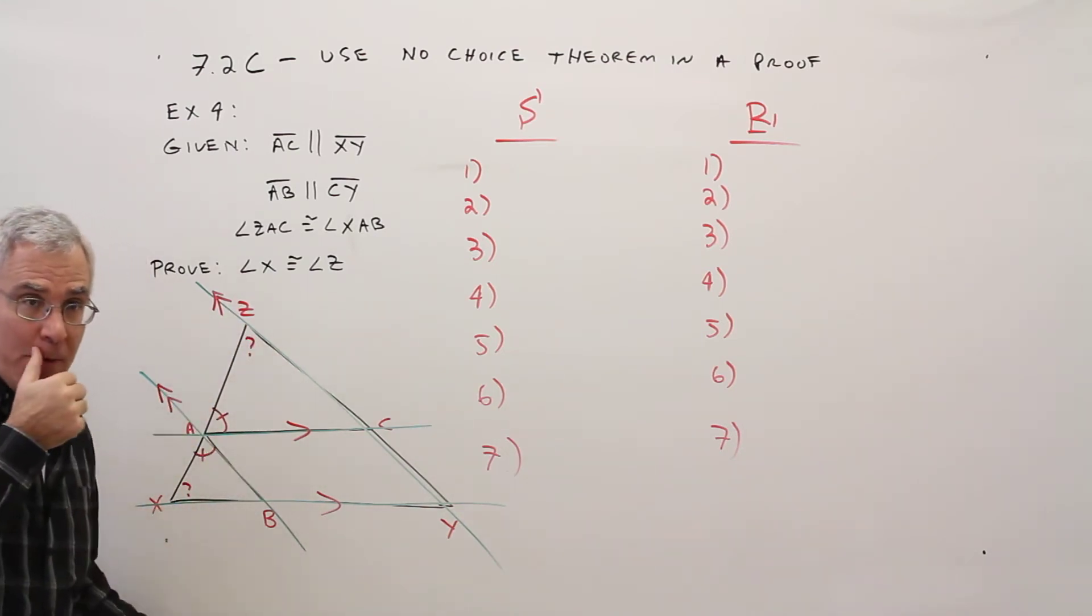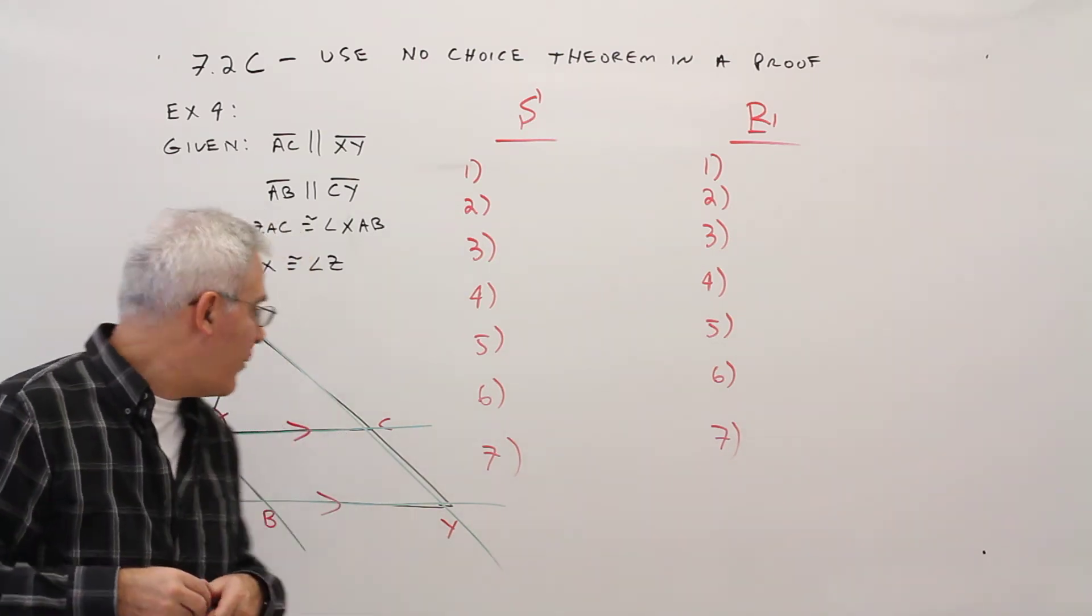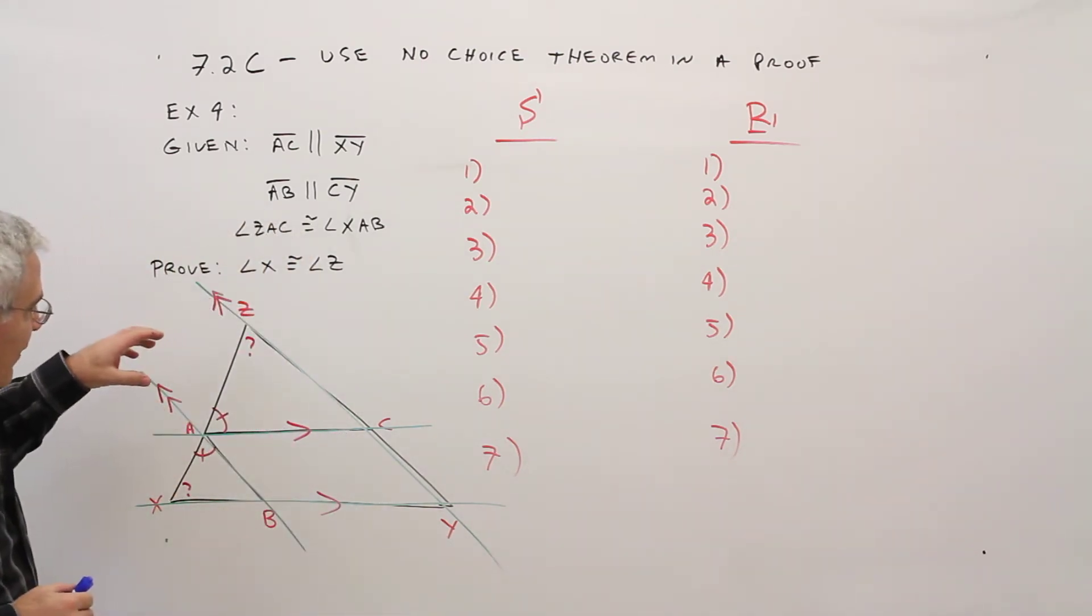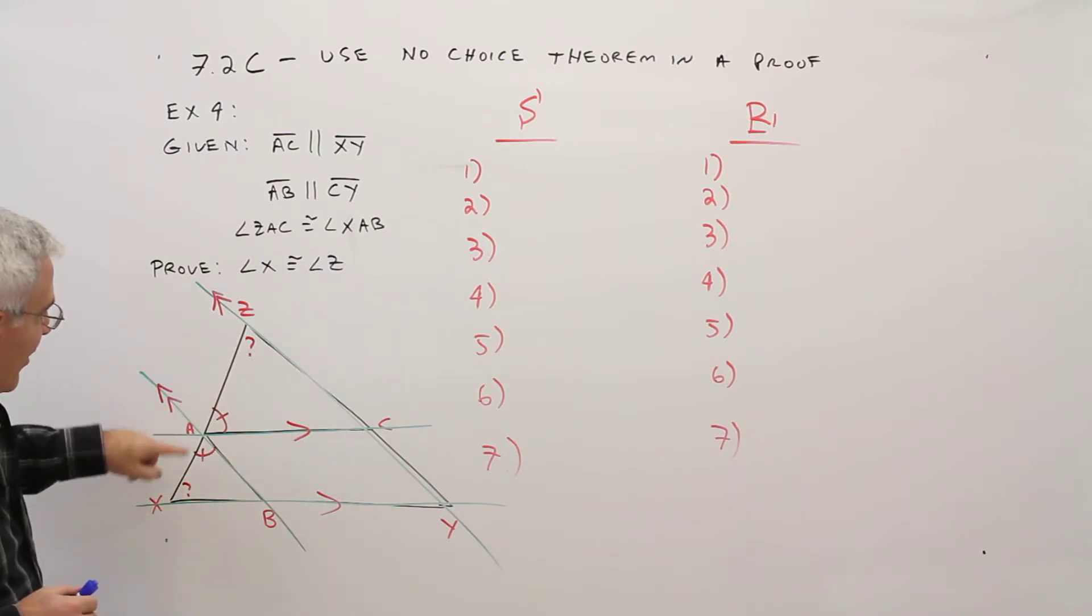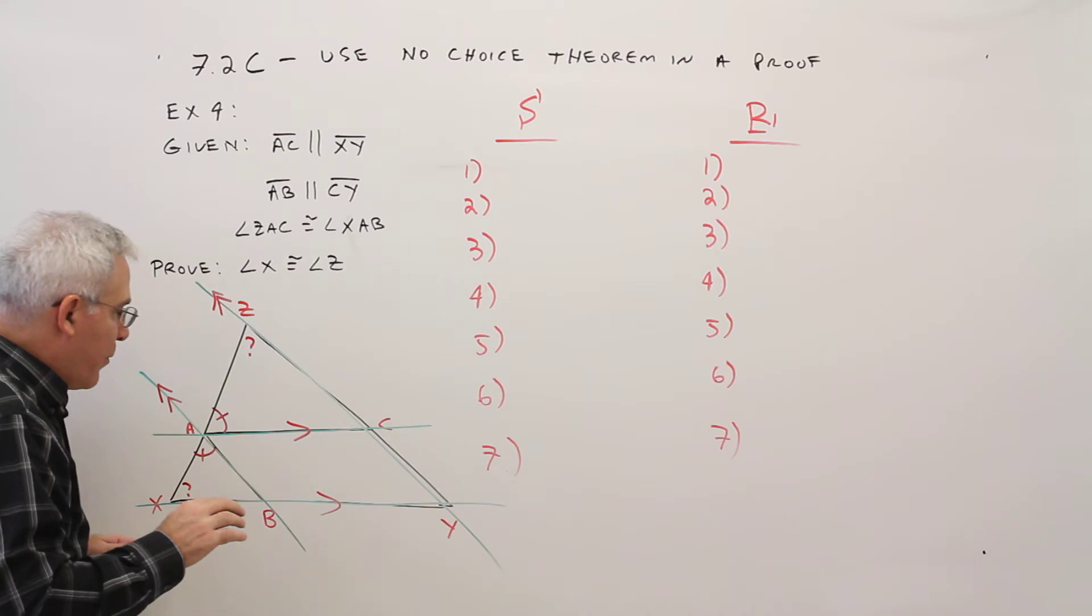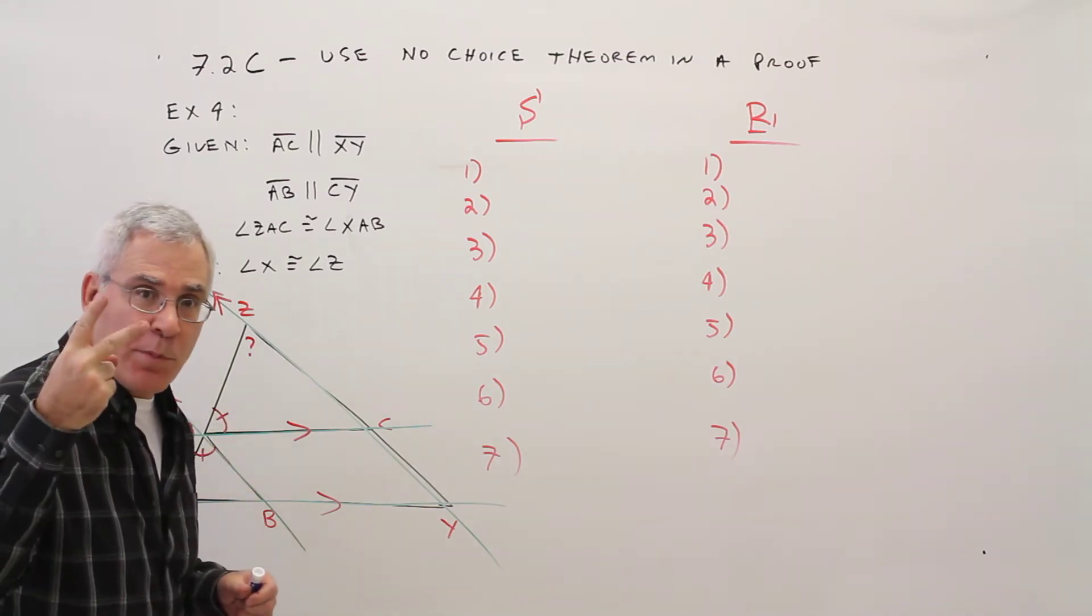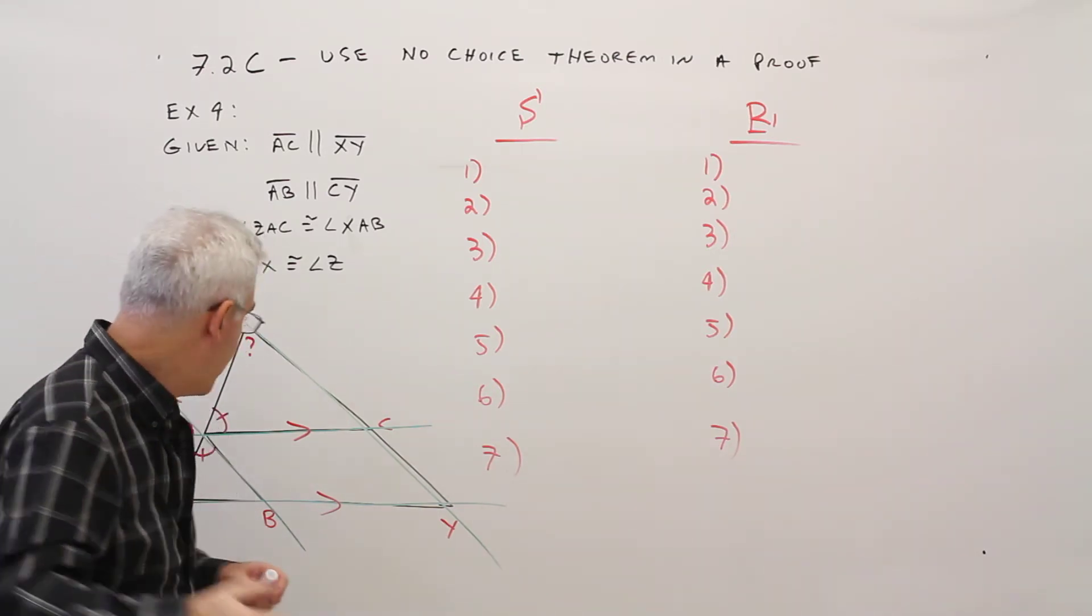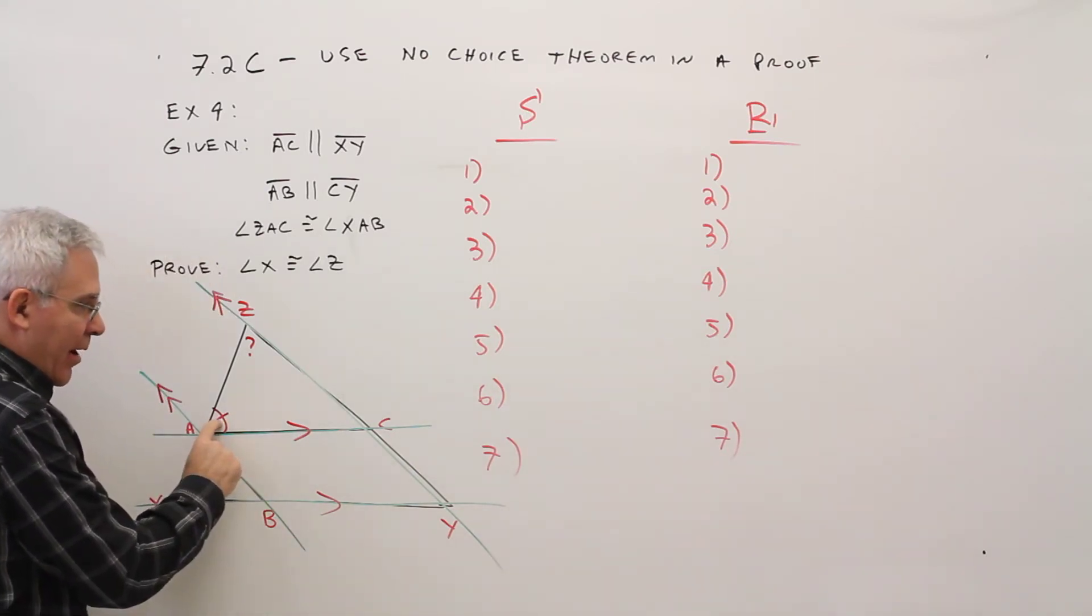So I gave you a hint. We're going to be using the no-choice theorem here. It looks like these are angles in a triangle, so I don't need to get the triangles congruent. But if I could possibly get two pairs of angles congruent, I can get to the third pair. I've already got this pair here.